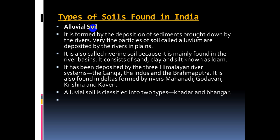Alluvial soil has been deposited by the three Himalayan river systems — the Ganga, Indus, and Brahmaputra — mainly in India. It is also found in the delta parts of the Mahanadi, Godavari, Krishna, and Kaveri rivers. You can understand from the map where it is found — in the delta areas and the plains of the Ganga, Brahmaputra, Krishna, and Kaveri.